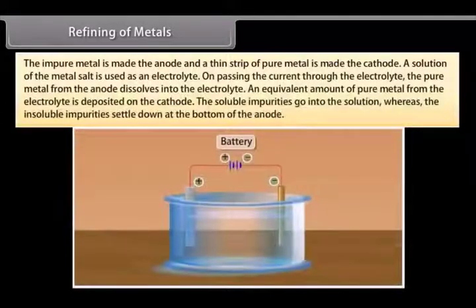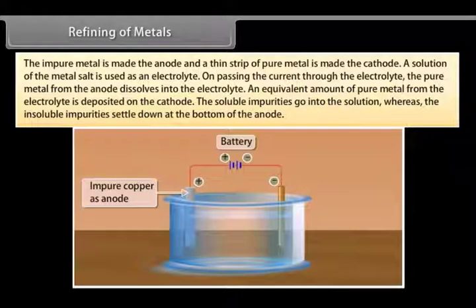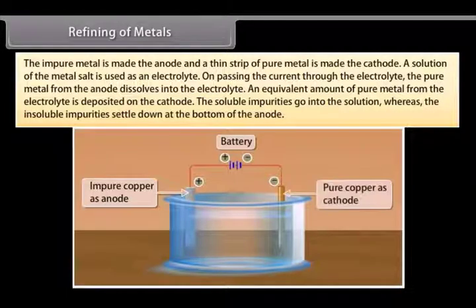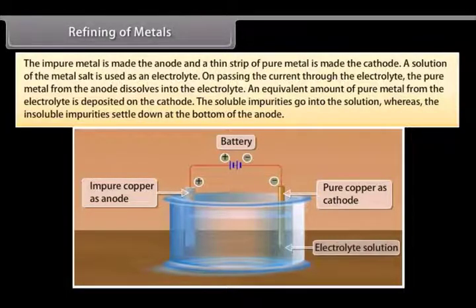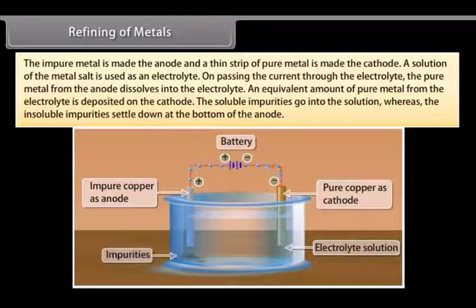The impure metal is made the anode and a thin strip of pure metal is made the cathode. A solution of the metal salt is used as an electrolyte. On passing the current through the electrolyte, the pure metal from the anode dissolves into the electrolyte. An equivalent amount of pure metal from the electrolyte is deposited on the cathode. The soluble impurities go into the solution, whereas the insoluble impurities settle down at the bottom of the anode. These are known as anode mud.